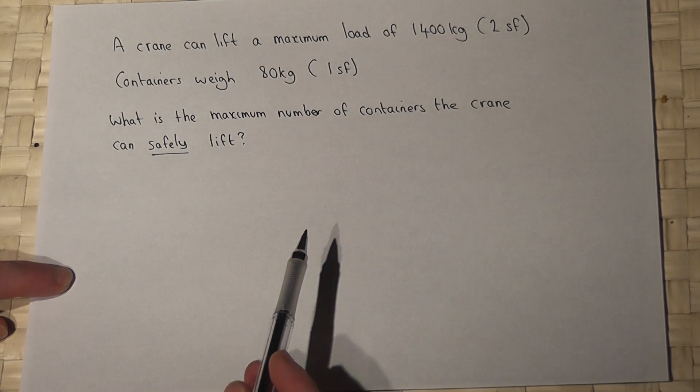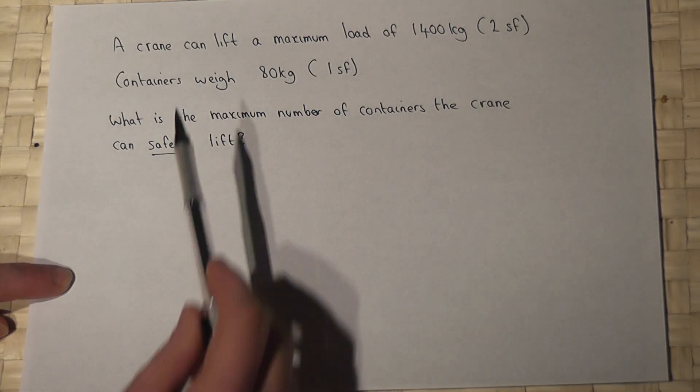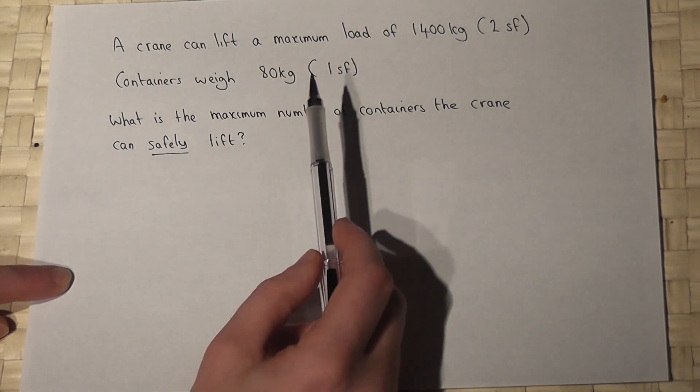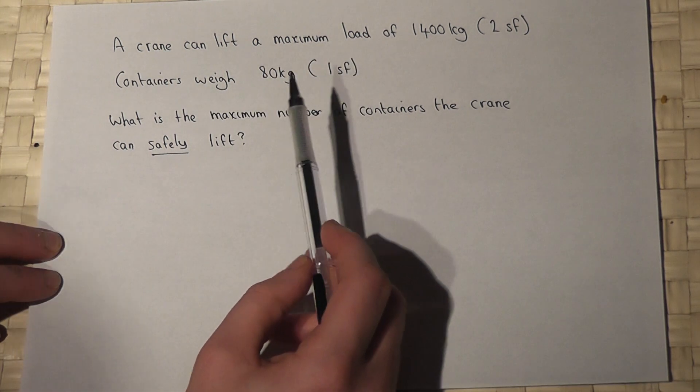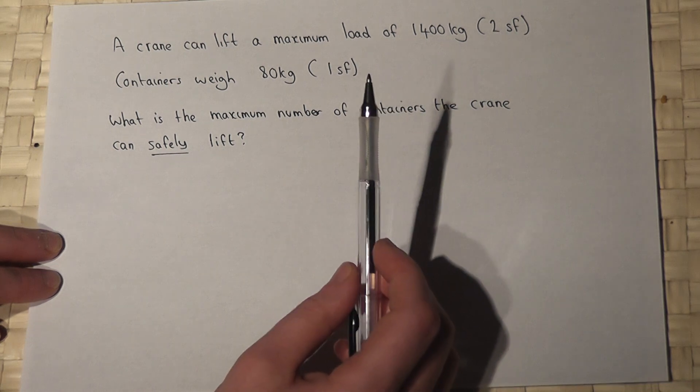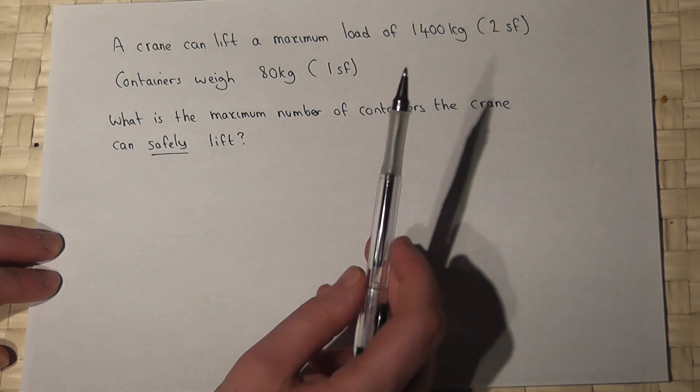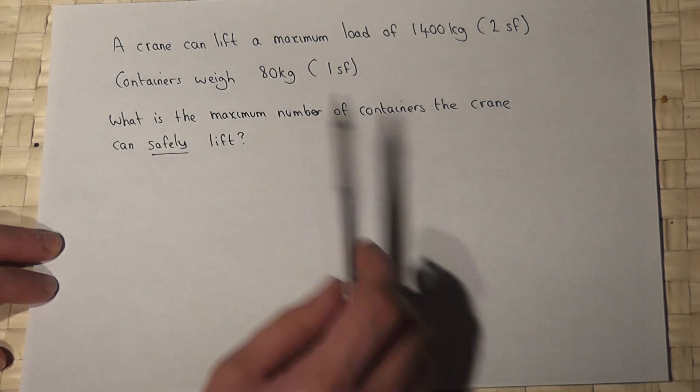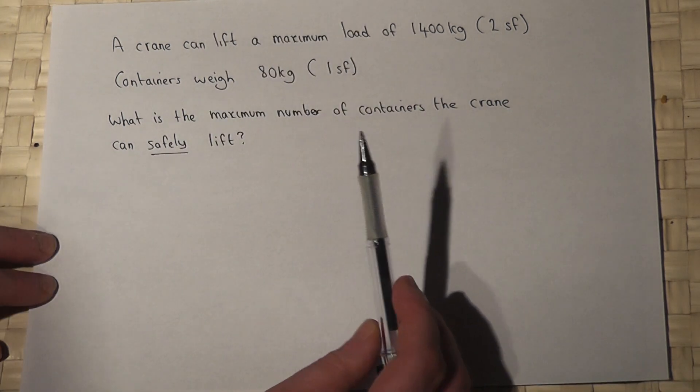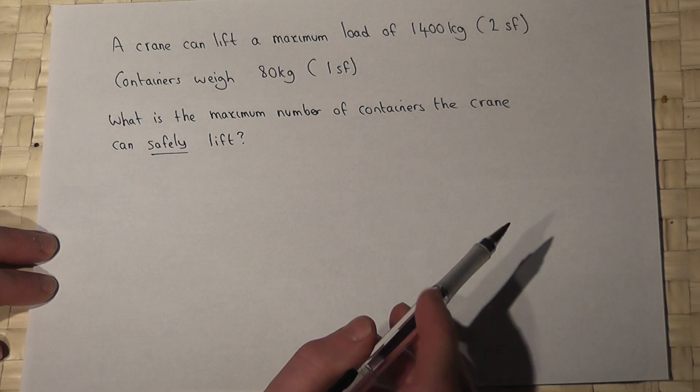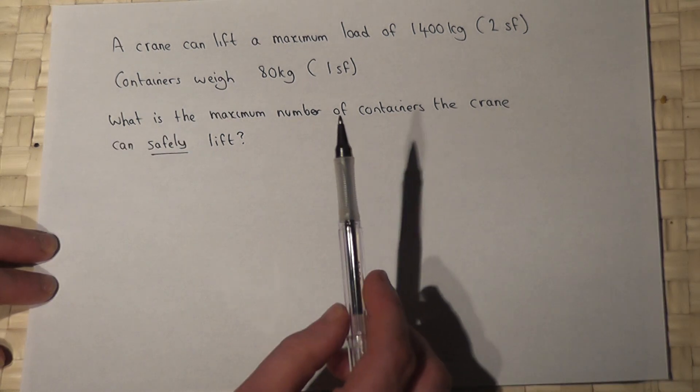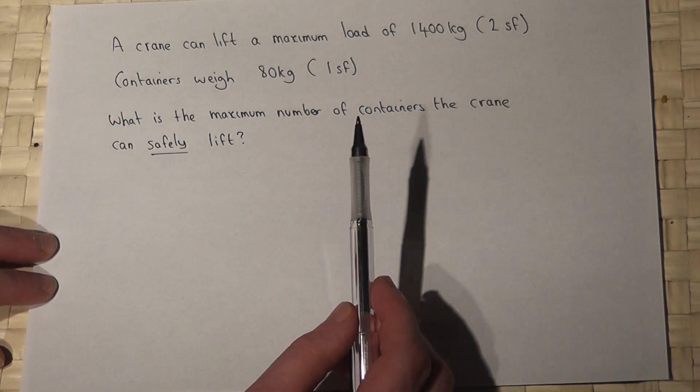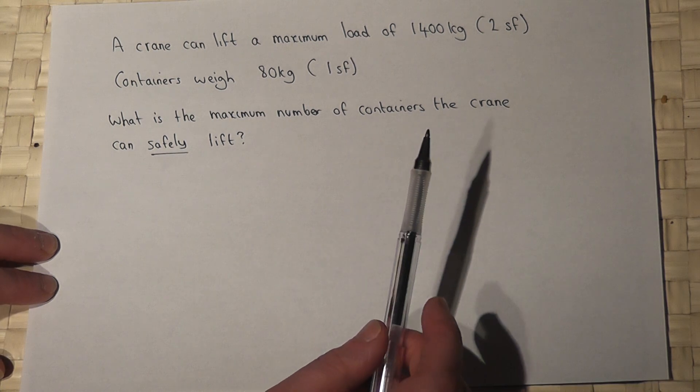In this problem we have a crane which can lift a maximum load of 1,400 kilograms to two significant figures, and it's trying to lift some containers that weigh 80 kilograms to one significant figure. The question is how many containers can the crane safely lift?